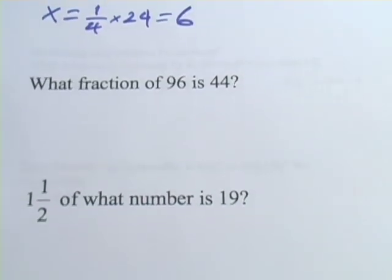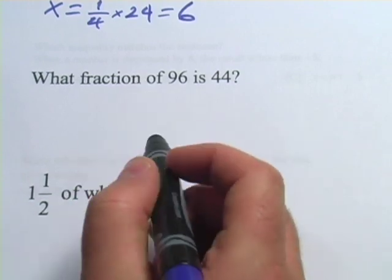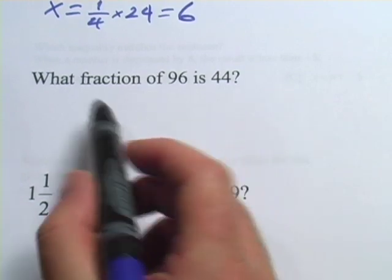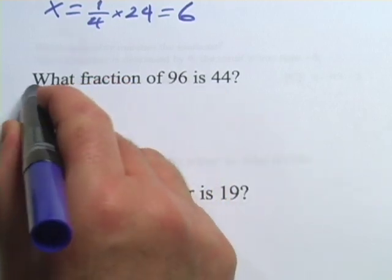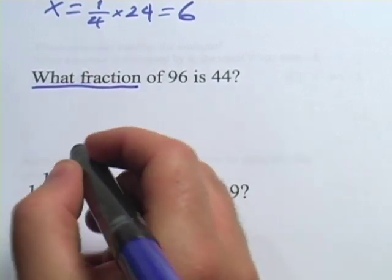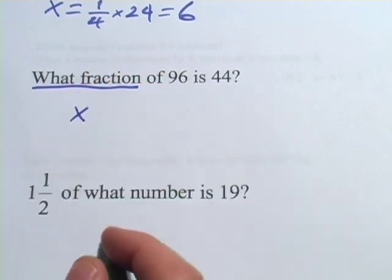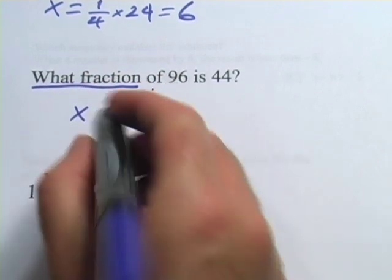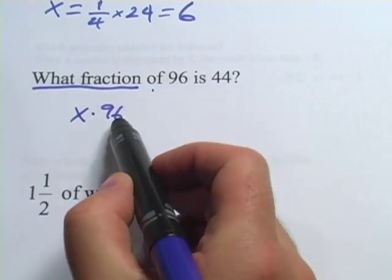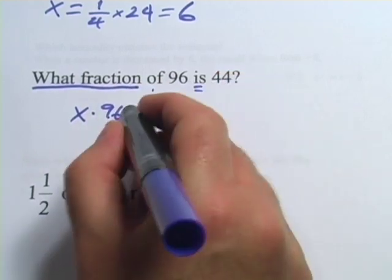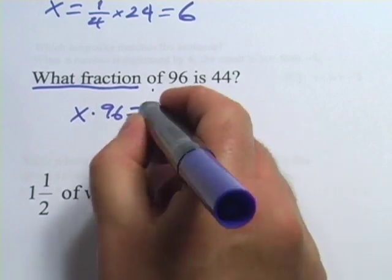Let's try another one with this method. This one might be a little harder to wrap your head around but the method will work. What fraction of 96 is 44? First we have our 'what' phrase—what fraction—so we're just going to call that X. Of is multiplication so we're going to multiply X times 96. Is is our equal sign, so we put the equal sign in there and then 44.